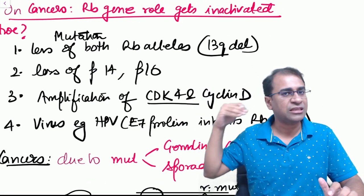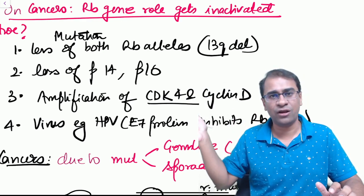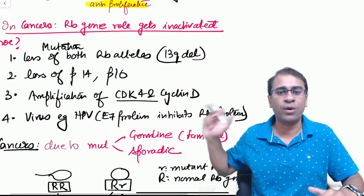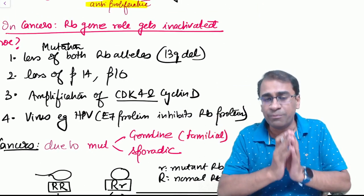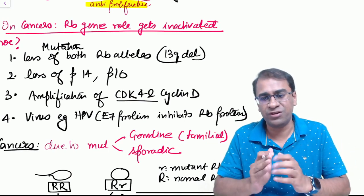The mutation of this RB can occur if there is any of these four things: loss of RB, loss of p16 (remember p16 is the INK4), amplification of CDK and/or the cyclin D, or it can be a virus. HPV is the one which inhibits the RB by E7 protein, whereas the E6 protein inhibits the p53.